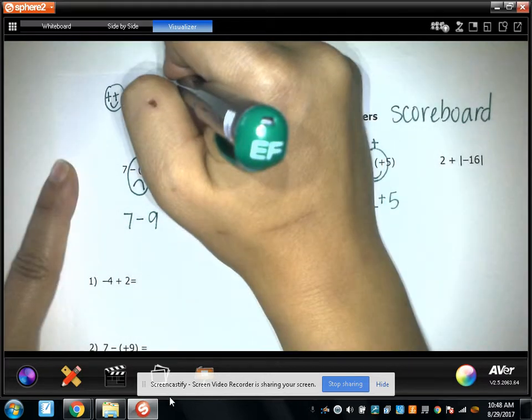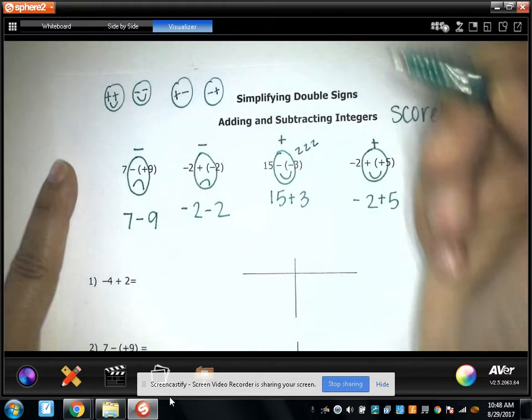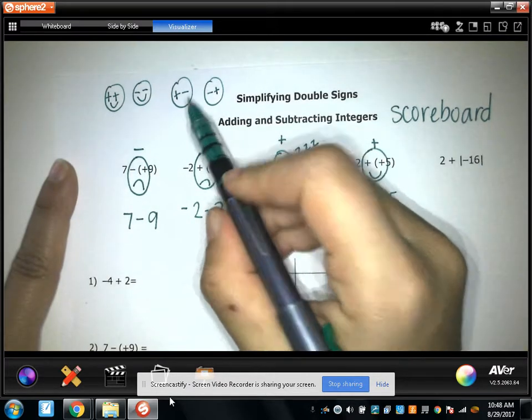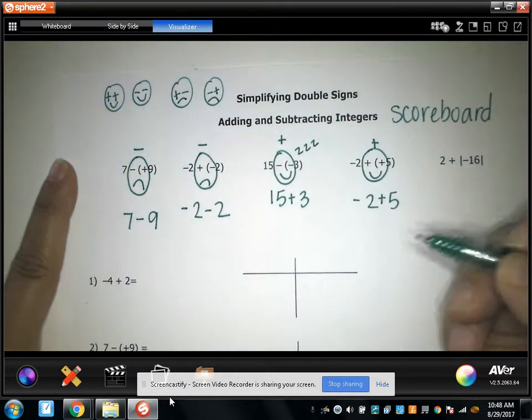When they're opposite signs, that's a negative thing. They got hit in the eye. One of the eyes is swollen shut. It's very sad. So that's a negative thing.